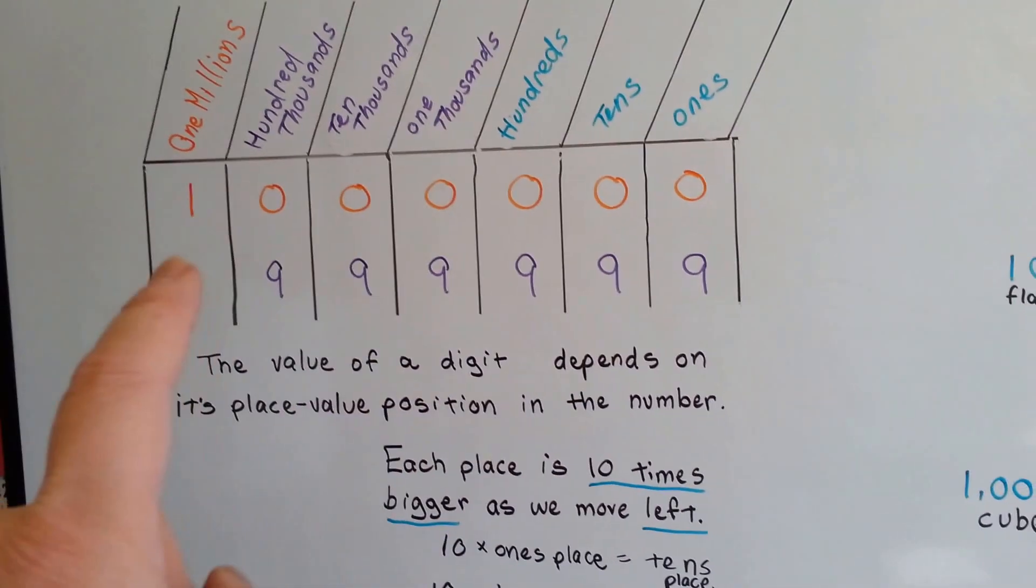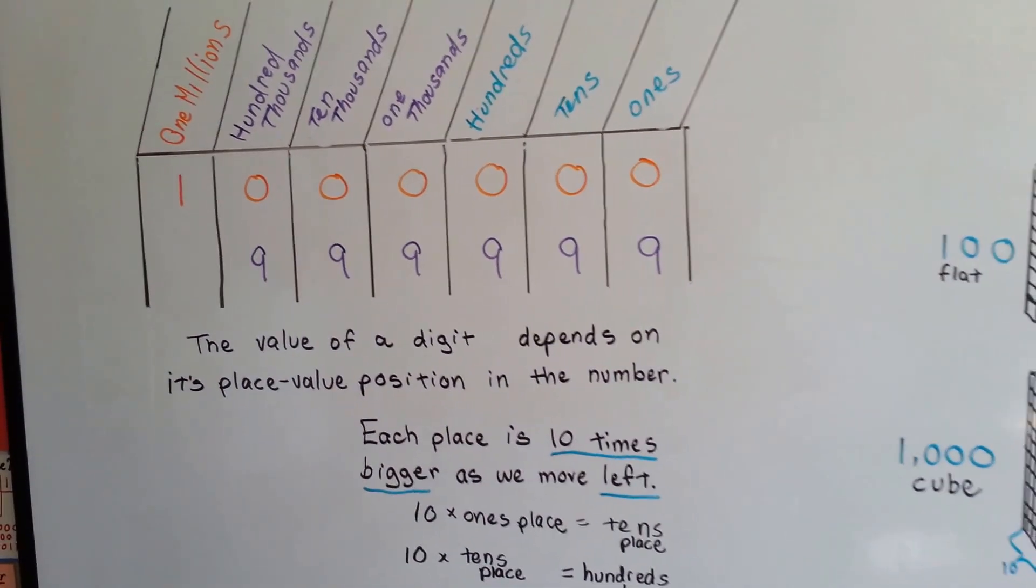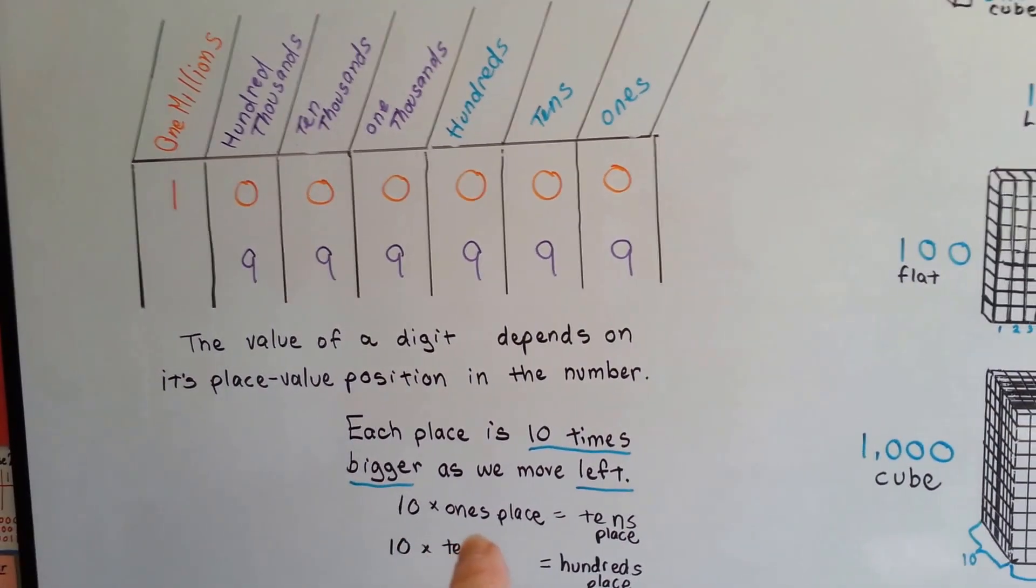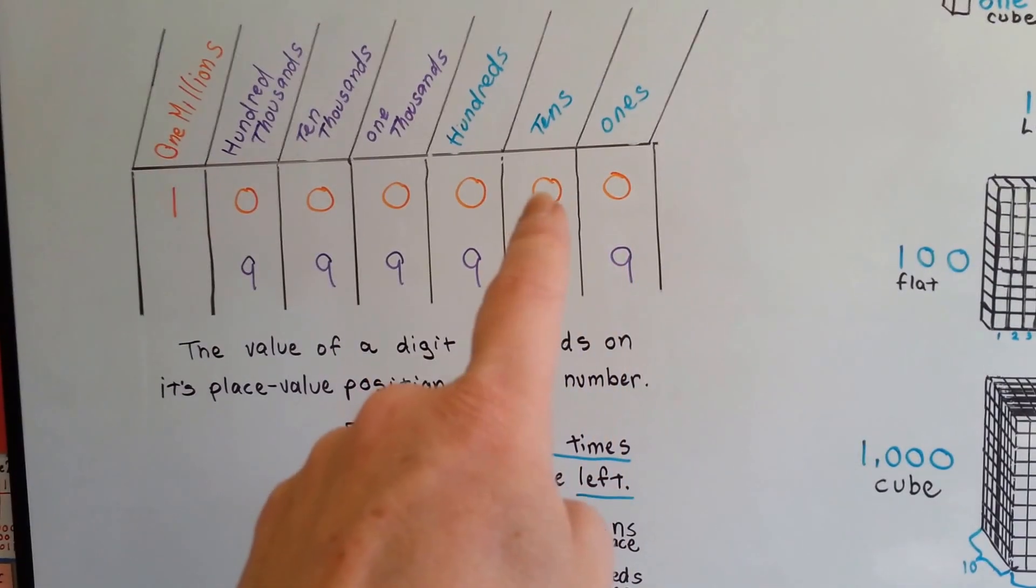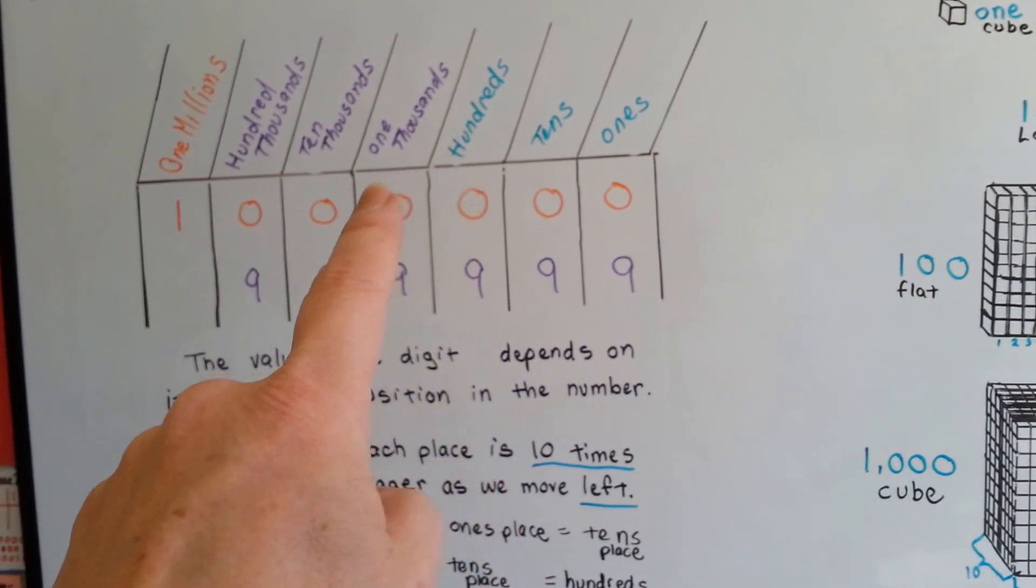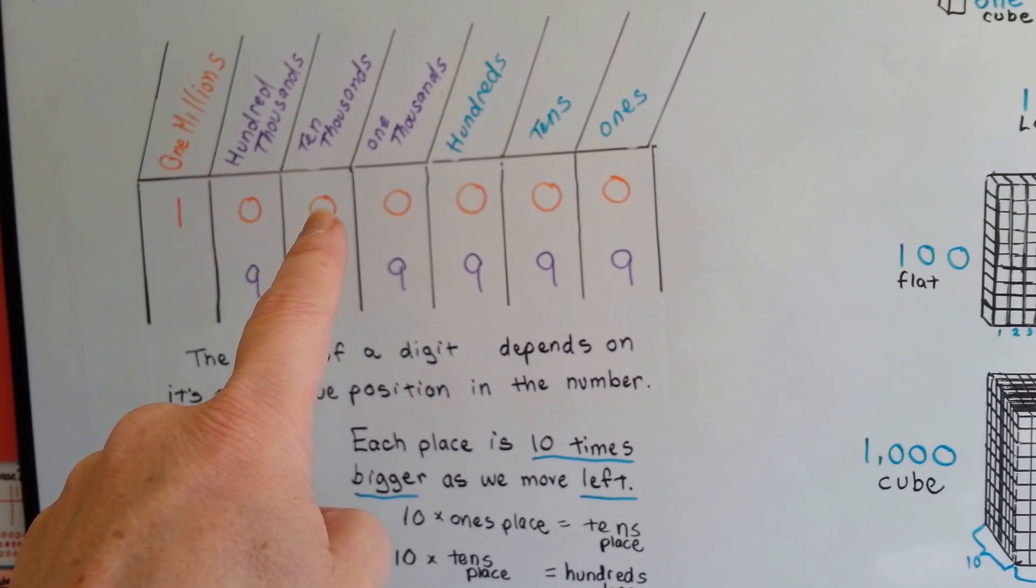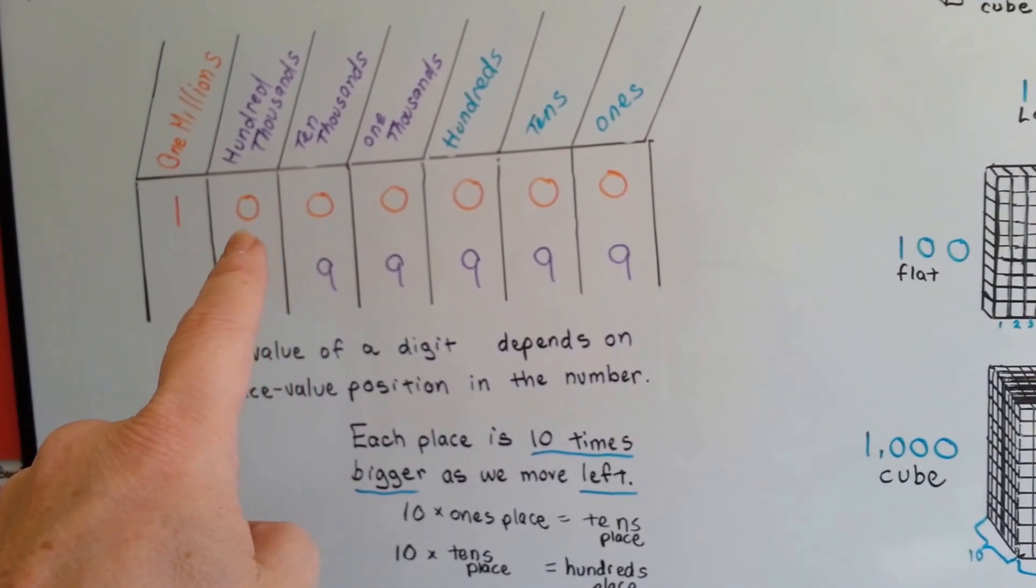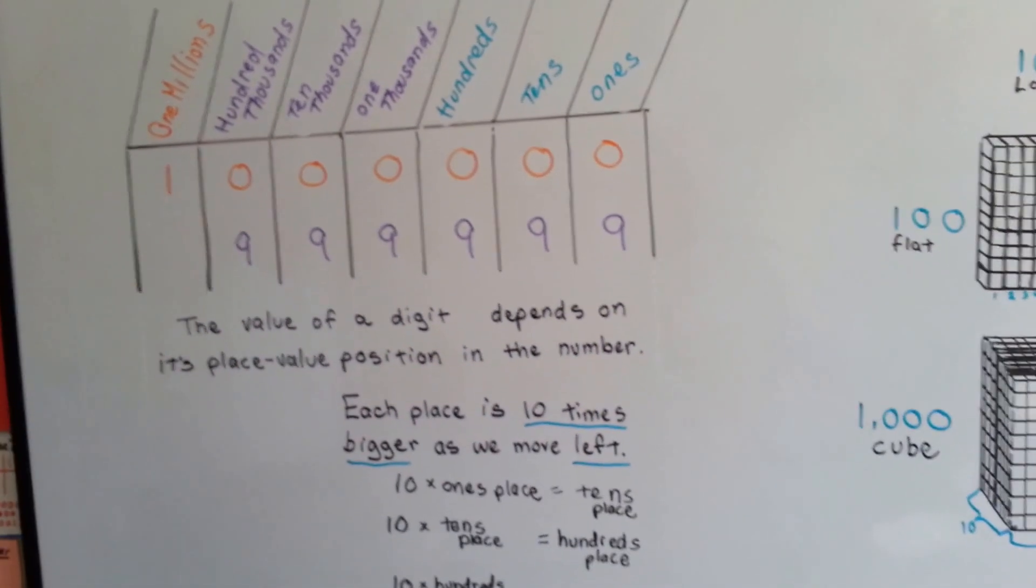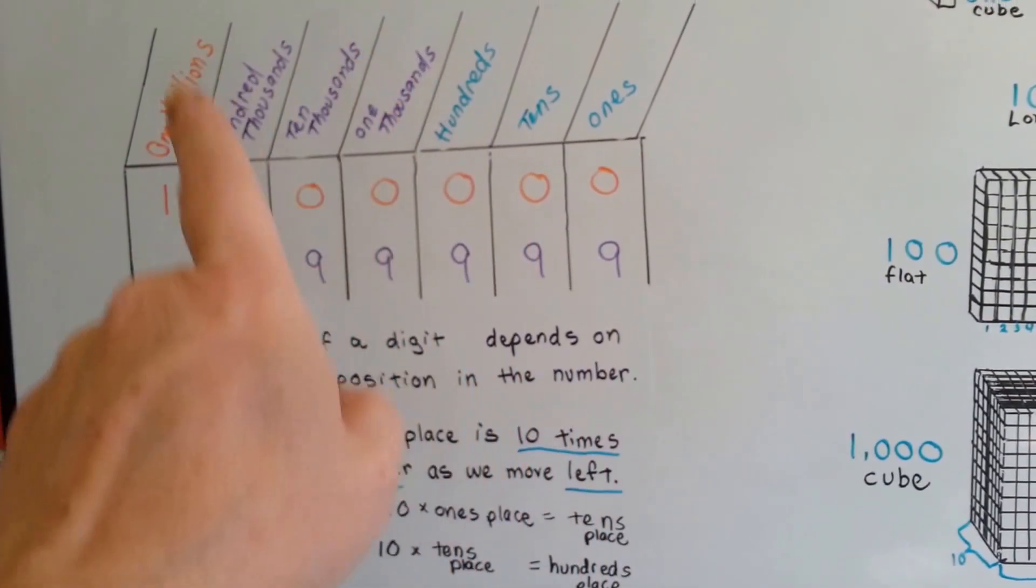Each one of these place values is ten times bigger as we move to the left. Ten times the ones place puts you in the tens place. Ten times the tens place puts you in the hundreds place. And ten times that puts you in the thousands place. Ten times that puts you in ten thousands. Ten times that puts you in the hundreds thousands. And then ten times that puts you into the millions. And it keeps going. You multiply it by ten.